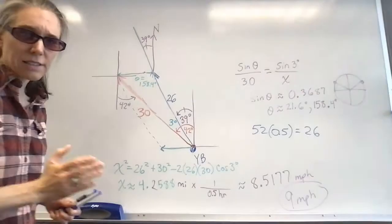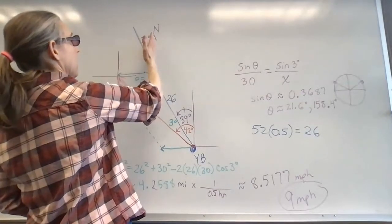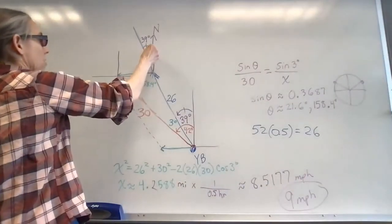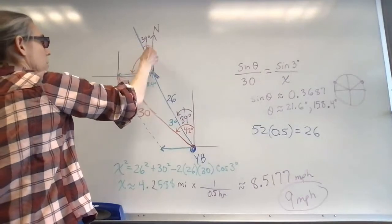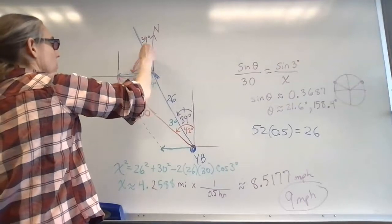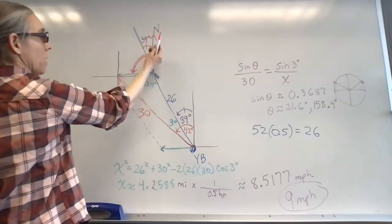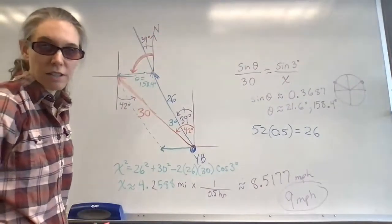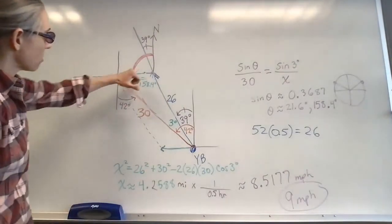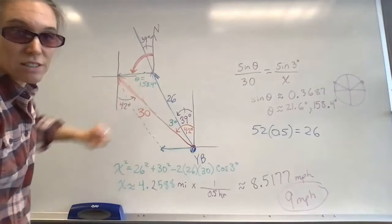So all that's left to figure out the bearing is to figure out this pink angle. We want to see this pink angle, this nice big fat pink angle. We know that part of it is 39 degrees. What's the other part of it? Well, the other part of it is actually the supplement of the angle inside the triangle.